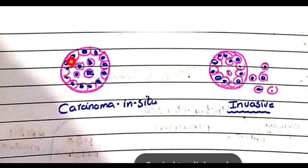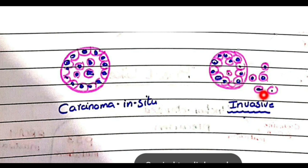Looking at this diagram, you can see these neoplastic epithelial cells are present but are not invading the basement membrane that is lining here. In invasive carcinoma, the atypical neoplastic cells invade this basement membrane and try to form a separate mass or group of cells. The major difference in carcinoma in situ versus invasive carcinoma is that in carcinoma in situ there is no invasion or breach of the basement membrane.